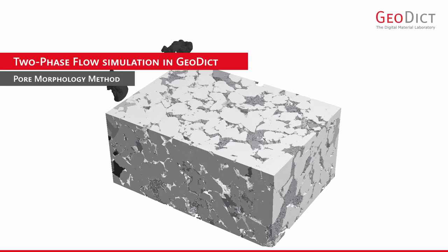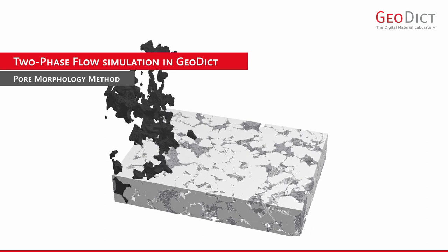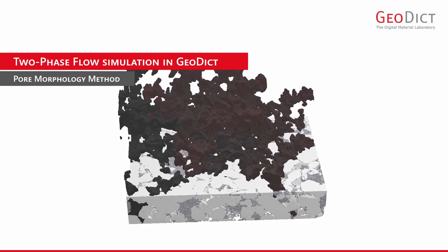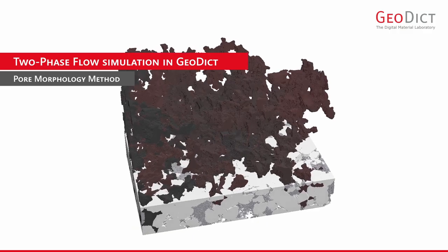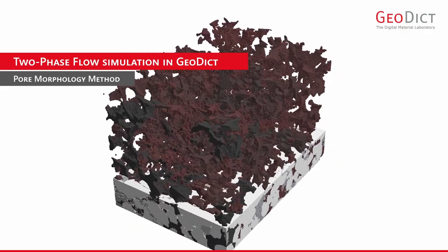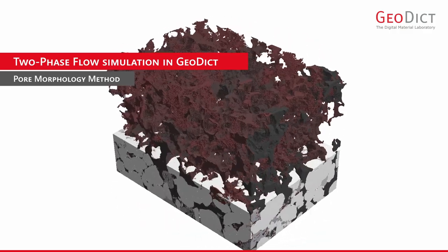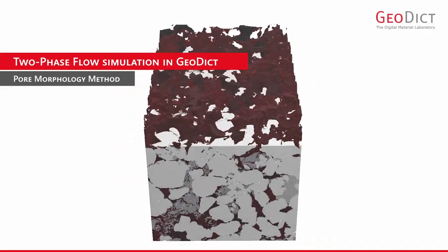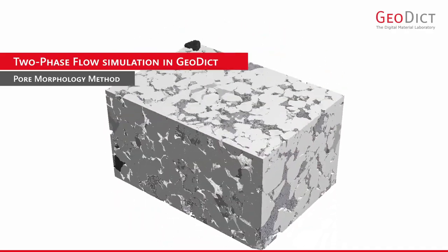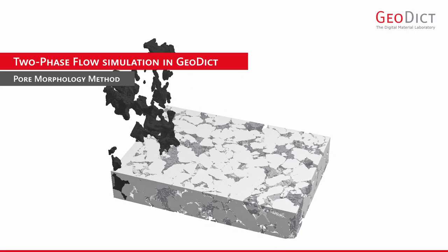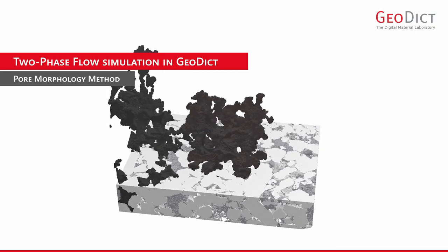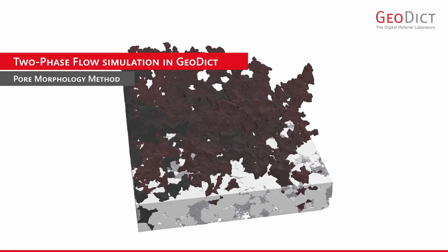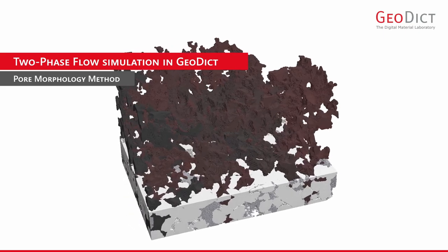The most important properties for digital core analysis are in the category of two-phase flow. In GeoDICT, two-phase flow is computed via the pore morphology method, introduced 20 years ago and today significantly enhanced towards applicability in reservoir rocks. GeoDICT easily predicts two-phase flow in large 3D geometries, as seen in this animation of a primary drainage computed in a Berea sandstone.